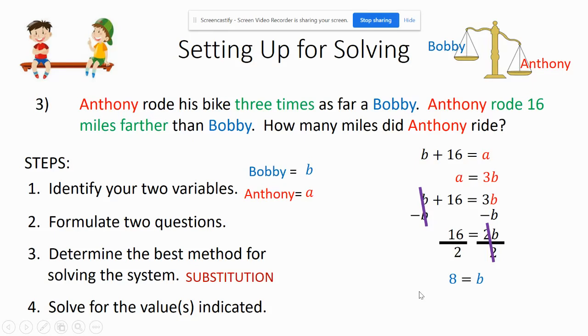That means Bobby was eight, and then eight plus 16 would be Anthony. Anthony rode 24 miles and Bobby rode eight.